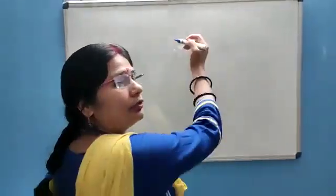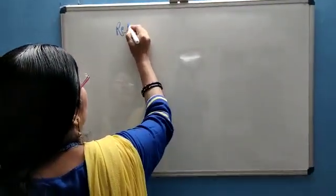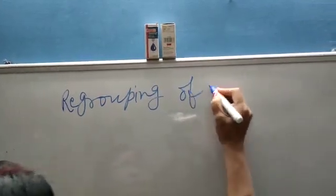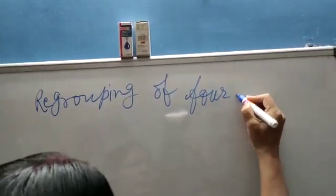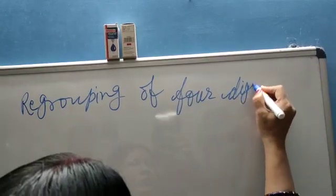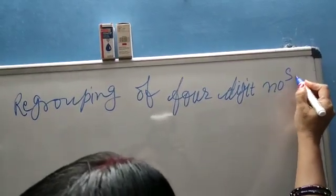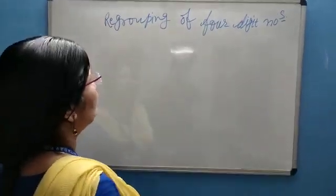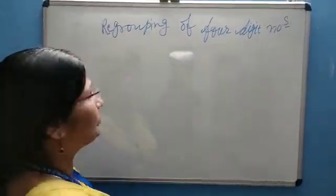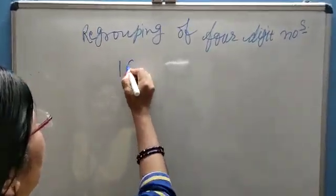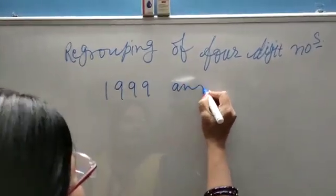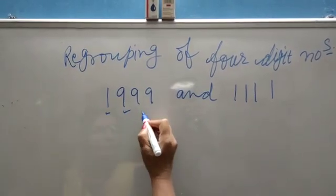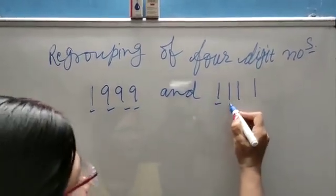Now, regrouping of four-digit numbers. Suppose you have given two numbers: 1,999 and 1,111.